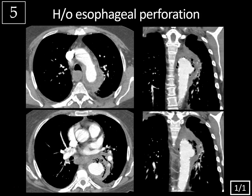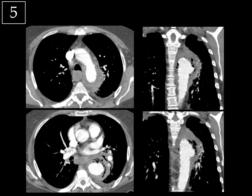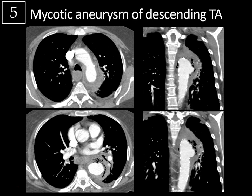Case 5: history of esophageal perforation, CT angiogram of the chest. At the aortic arch level, there's fluid and a hyperattenuating rim surrounding the descending thoracic aorta, indicating aortitis. Moving inferiorly, there's a saccular outpouching from the left aspect of the descending thoracic aorta surrounded by multiple foci of gas and a rind of soft tissue and fluid. The coronal images show this aneurysm is very saccular and irregular with a beaked appearance, surrounded by multiple foci of gas. This is typical for a mycotic aneurysm of the descending thoracic aorta.